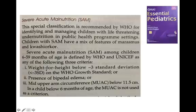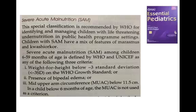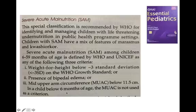The most important criteria for acute malnutrition is weight-for-height. The second criteria is presence of symmetrical edema. The third criteria is mid-upper arm circumference (MUAC) below 11.5 centimeters. Remember, we cannot use MUAC in children below six months of age.